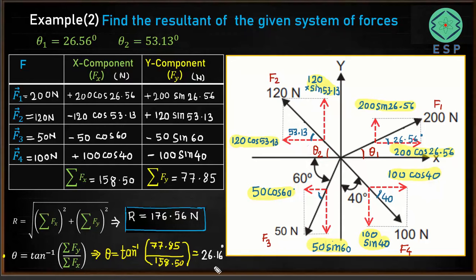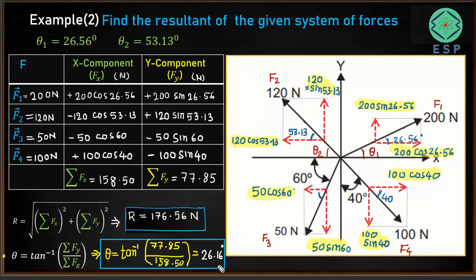So the magnitude of the resultant force is 176.56 N and its direction is theta = 26.16 degrees. This is the procedure we use to find the resultant of a given system of coplanar concurrent forces. Thank you very much.